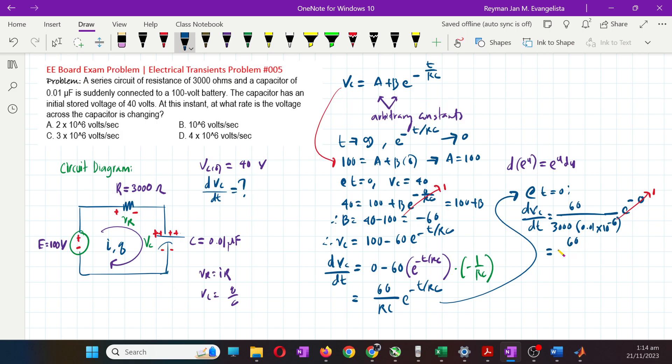Here is 60 over 3000 times 0.01 times 10 to the negative 6. By using your calculator, we will get 2 times 10 to the 6 power. The unit for derivative is V with respect to time, so it's volts per second.